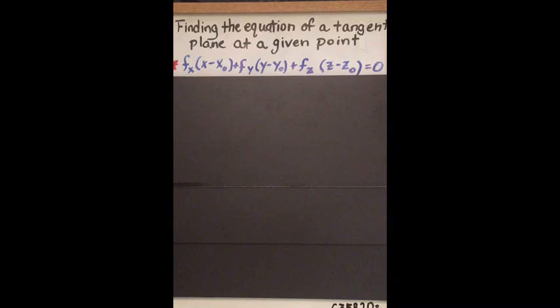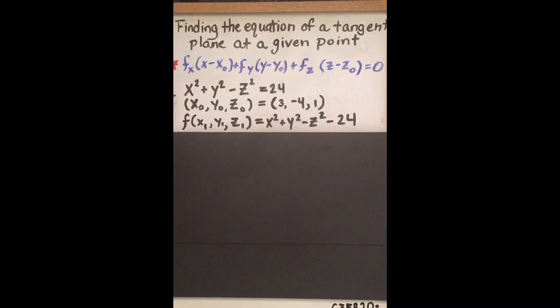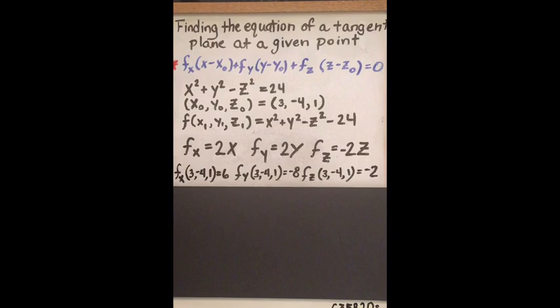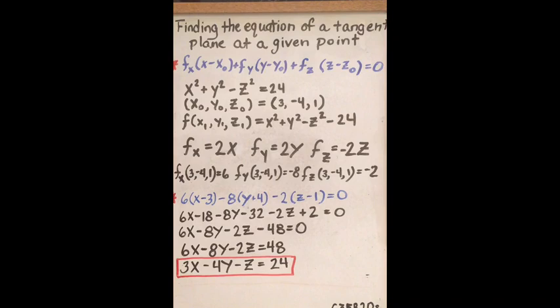Finding the equation of a tangent plane at a given point. We'll be using this formula. This is our given point. We need to create a function by setting the equation equal to 0. The next step is to find the partials with respect to x, y, and z respectively. Then we take the initial point and find the values of the partial derivatives for all three.